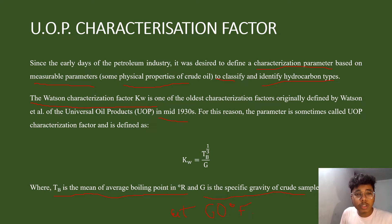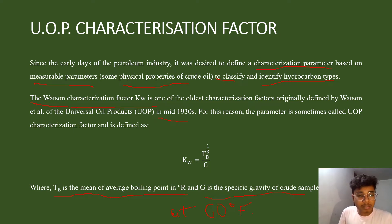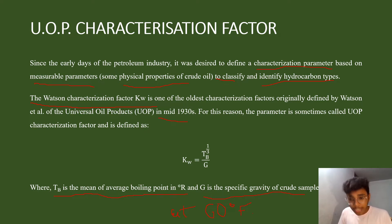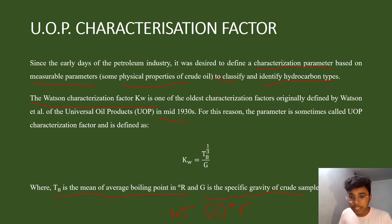KW is the UOP characterization factor. In the upcoming slides, we will study how to calculate the mean average boiling point in degrees Rankine. As we have studied earlier, the specific gravity of the crude can be calculated using the API equation, and we will be using that same approach to calculate the specific gravity.